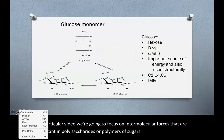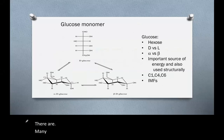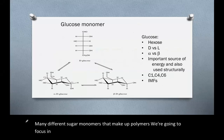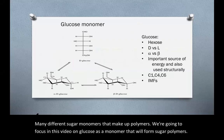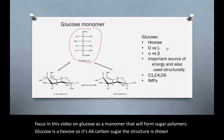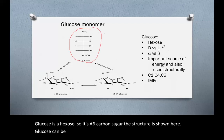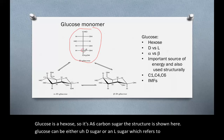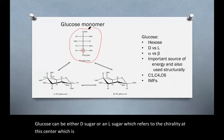There are many different sugar monomers that make up polymers. We are going to focus in this video on glucose as a monomer that will form sugar polymers. Glucose is a hexose, so it's a six-carbon sugar. The structure is shown here. Glucose can be either a D sugar or an L sugar, which refers to the chirality at the chiral center furthest away from the oxidized carbon. We're going to focus on D glucose.